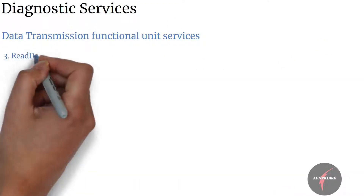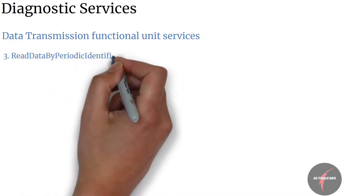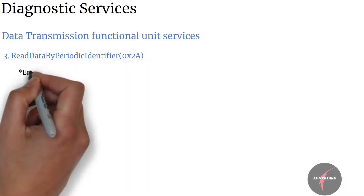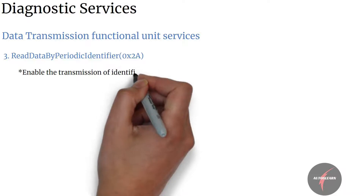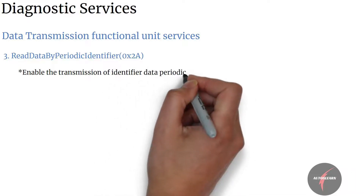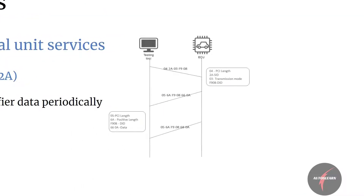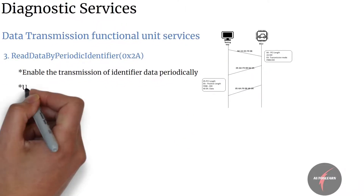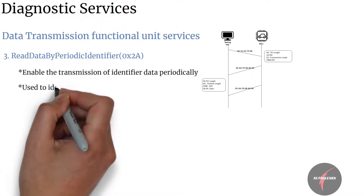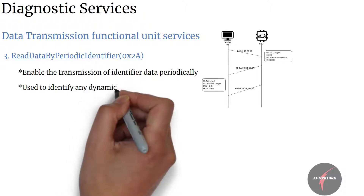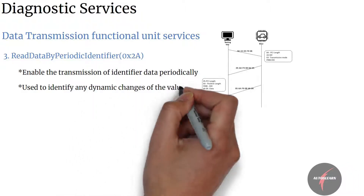Next, we have read data by periodic identifier. This service would enable the transmission of identifier data periodically. Using this service, the tester can request the ECU to transmit the value of the data identifier periodically to identify any dynamic changes of the value.